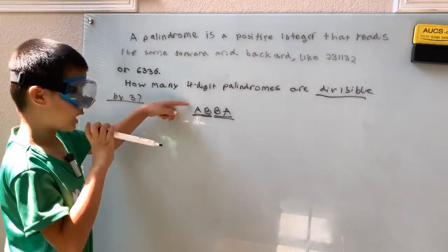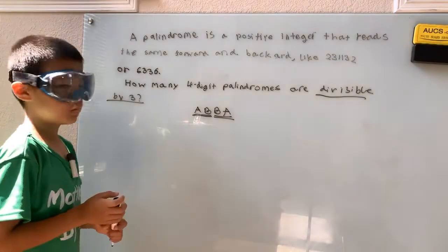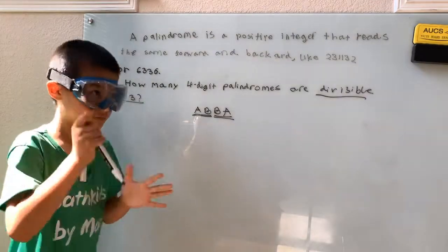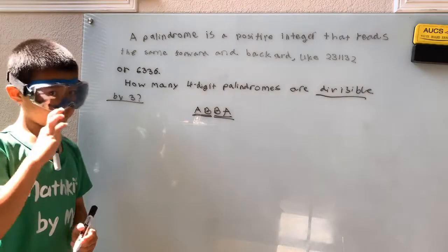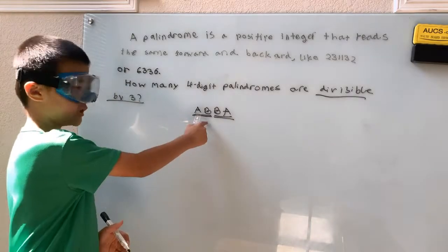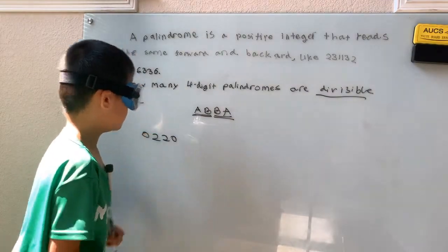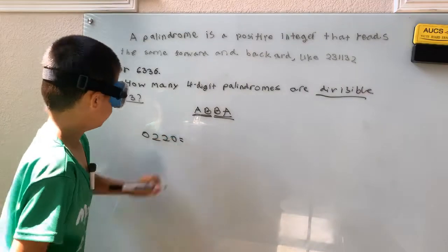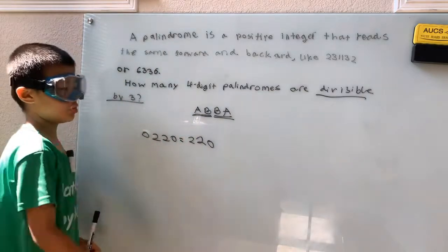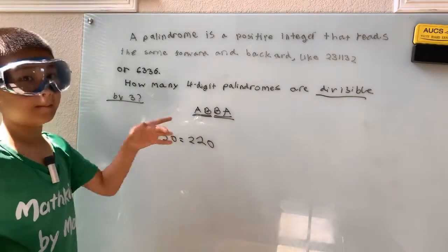We just need to find how many multiples of 3 there are in the valid range for AB. You might think we start at 3, the smallest positive multiple of 3, but A can't be 0. If A were 0, the number wouldn't actually be a four-digit palindrome — it would just be 220 or similar, which is not a palindrome. So A can't be 0.